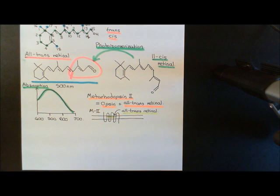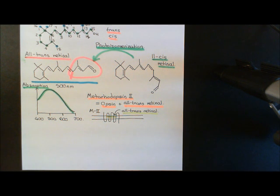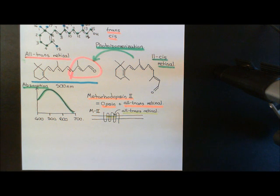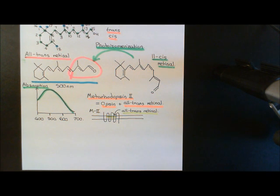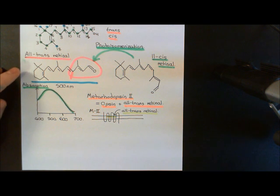Welcome back to this next video in which we are discussing the visual system. We're currently in the process of discussing phototransduction, and the point we've got to so far is that when a photon hits a rhodopsin receptor, it can be absorbed by the 11-cis retinal molecule that is part of the rhodopsin receptor, and it will then photoisomerise back to all-trans retinal.